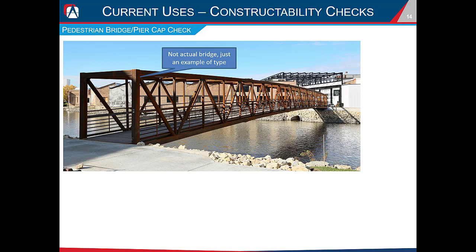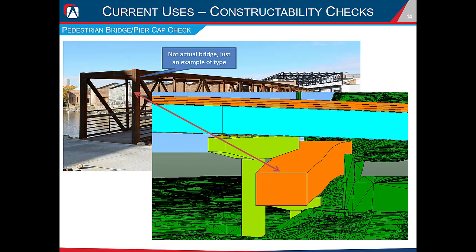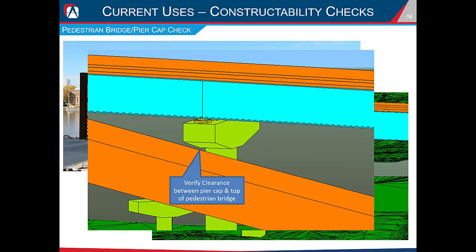Another frequent current use of OBM is for constructability checks. In one example, a pedestrian bridge was going underneath a proposed bridge. Although OBM doesn't handle truss bridges, the envelope of the pedestrian bridge was modeled as a deck component in OBM to check clearances. The original clearance check had only considered the superstructure depth to the top of the pedestrian bridge, and we were able to confirm we had the necessary clearance with the underside of the pier cap as well.